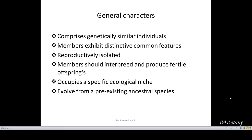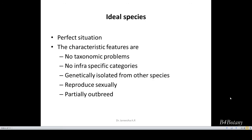Apart from that, there is one more term called ideal species. Ideal means a perfect situation — if a species doesn't have any attack from a problem and it doesn't have any infraspecific categories like subspecies, variety, subvariety, forma, or subforma.